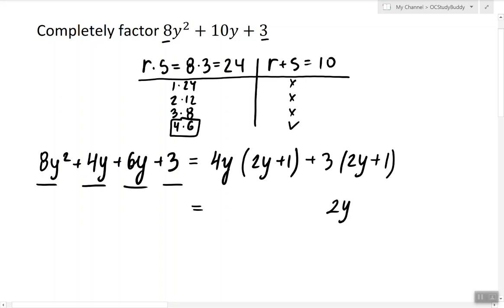Now these two have 2y plus 1 in common. What's left after we take 2y plus 1 out? It is 4y plus 3.